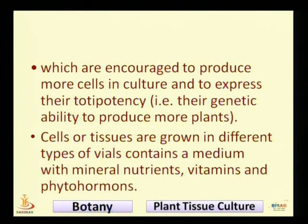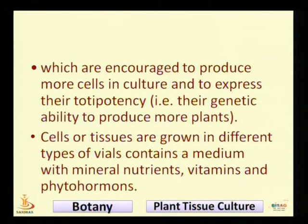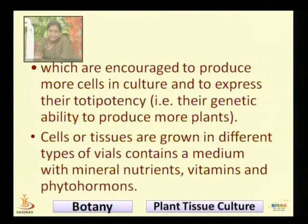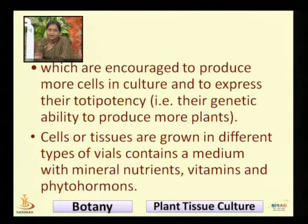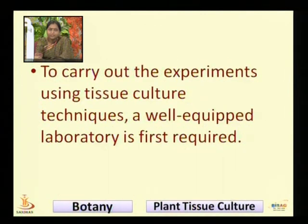Now, what is totipotency? Totipotency is the genetic ability to produce more plants. Cells or tissues are grown in different types of vials containing a medium with mineral nutrients, vitamins, and phytohormones.